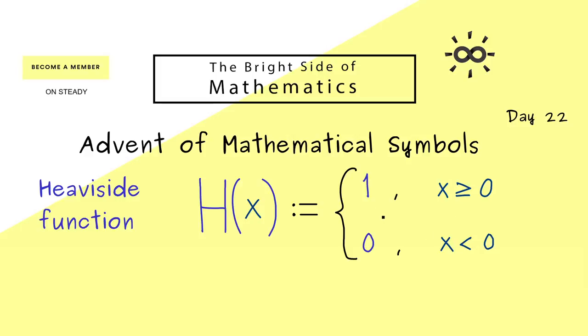However, there are also other conventions. Sometimes x equals 0 is set to 1/2. Then the value lies exactly in the middle here.